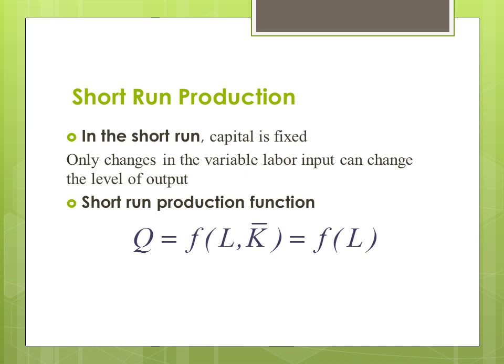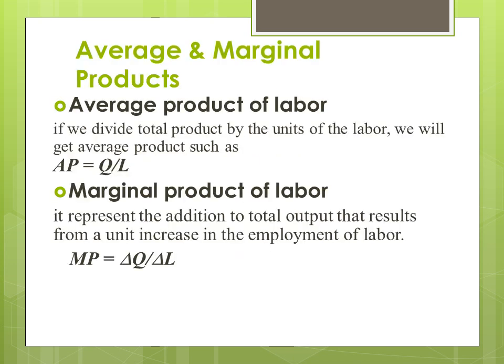The short-run production function is Q = f(L), where capital is kept constant and only labor changes. Now, what is the average product of labor? If we divide total product by the units of labor, we get the average product: Average Product = Q / L, where Q represents total product divided by units of labor.